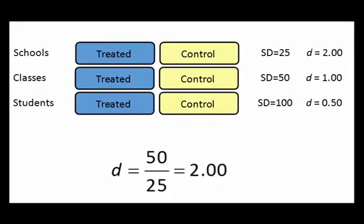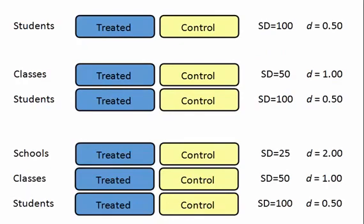Thus, if the actual effect size is identical in all three studies, the computed effect size will be 0.50 in one study, 1.0 in another, and 2.0 in a third. So, this is the problem that we need to address.